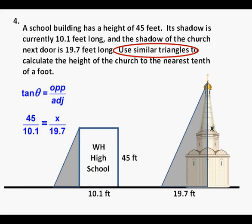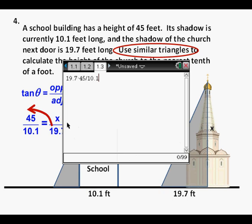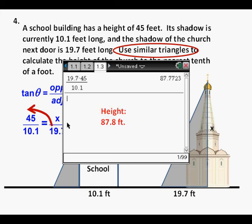To solve for the height, we have to cross multiply the 19.7 feet. So here it is entered into our calculator, 19.7 times 45 divided by 10.1. Pressing enter, we get 87.7723 feet. Rounded to the nearest tenth of a foot, we have 87.8 feet.